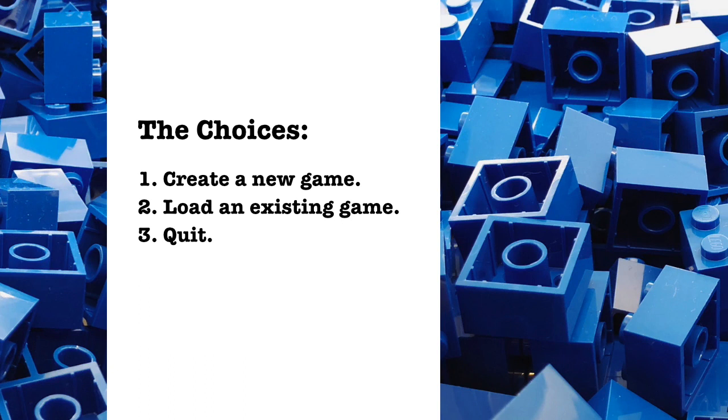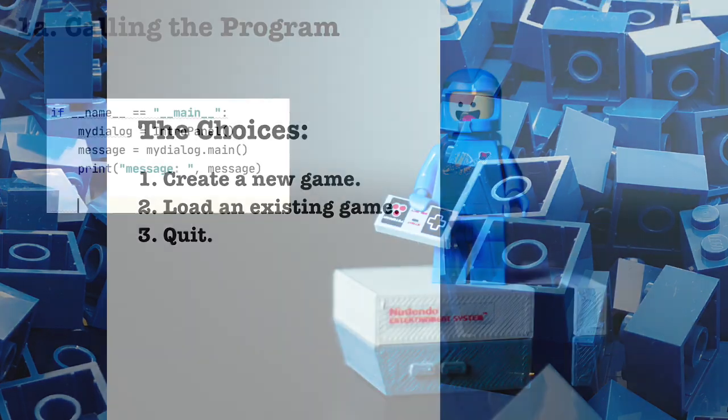The first thing we need to know is whether the user wants to A, create a new game, B, load an existing game, or C, quit. Since we're working with a graphical interface, our basic element of interaction is a window. So let's create one. On this window, we will draw three buttons, one for each choice. If you're a little nervous about constructing a graphical user interface, don't be. It really doesn't get any simpler than what we're about to code. And after you understand the basics, you can create any graphical element you like. Let's get started.